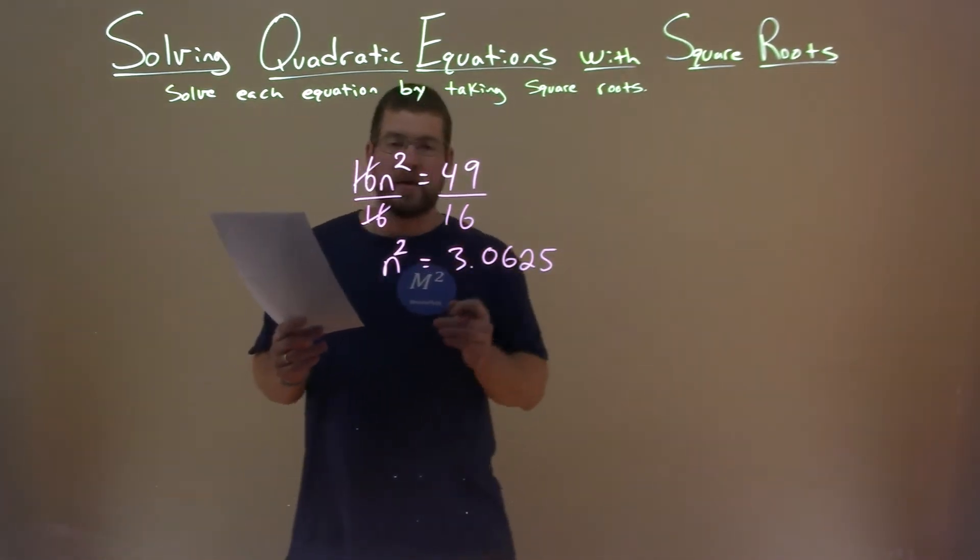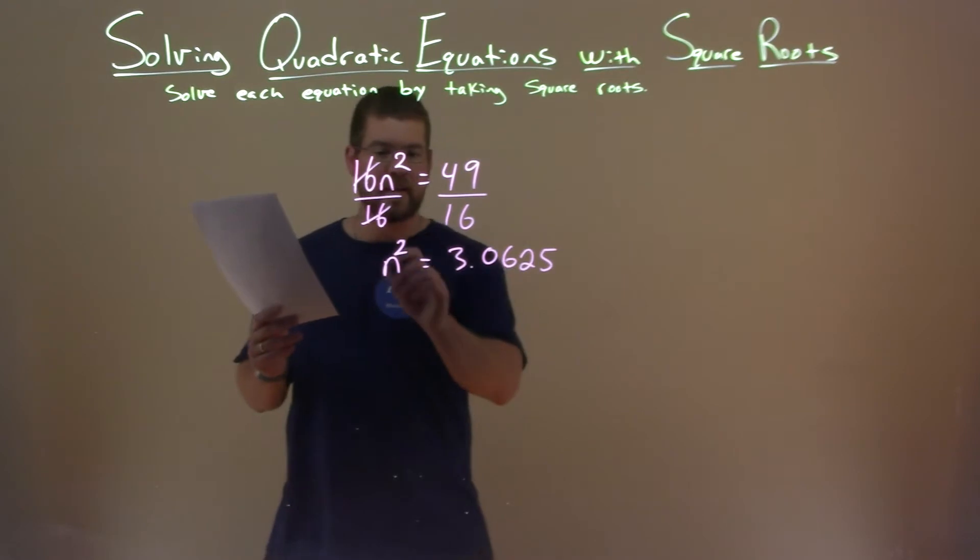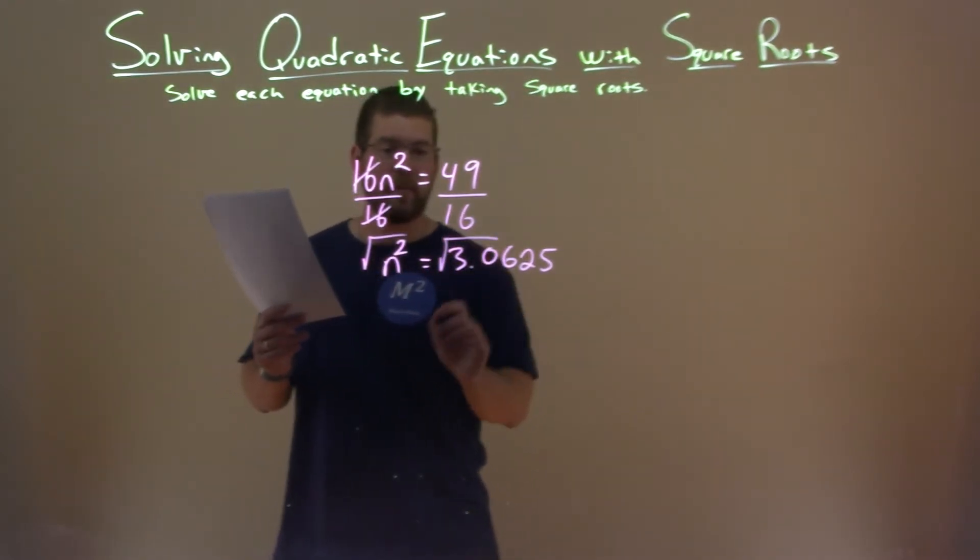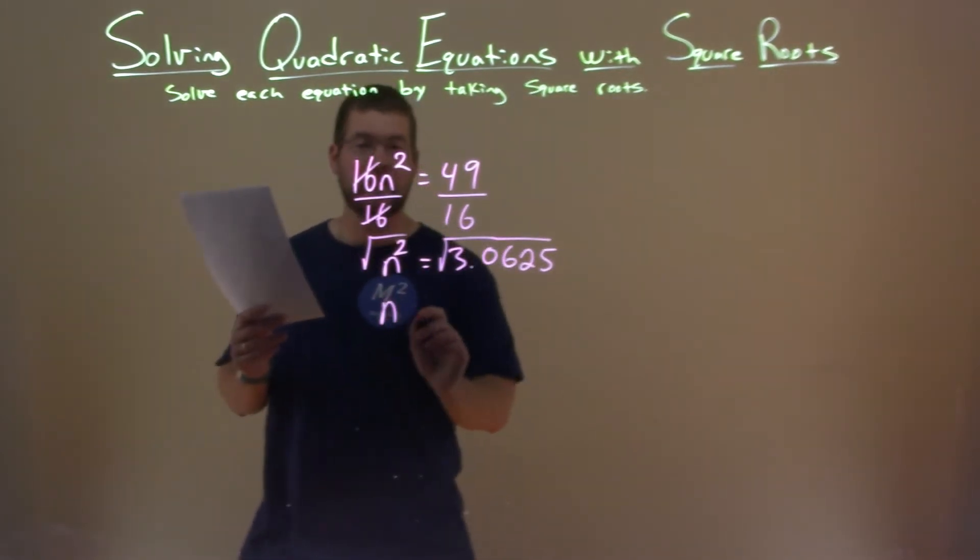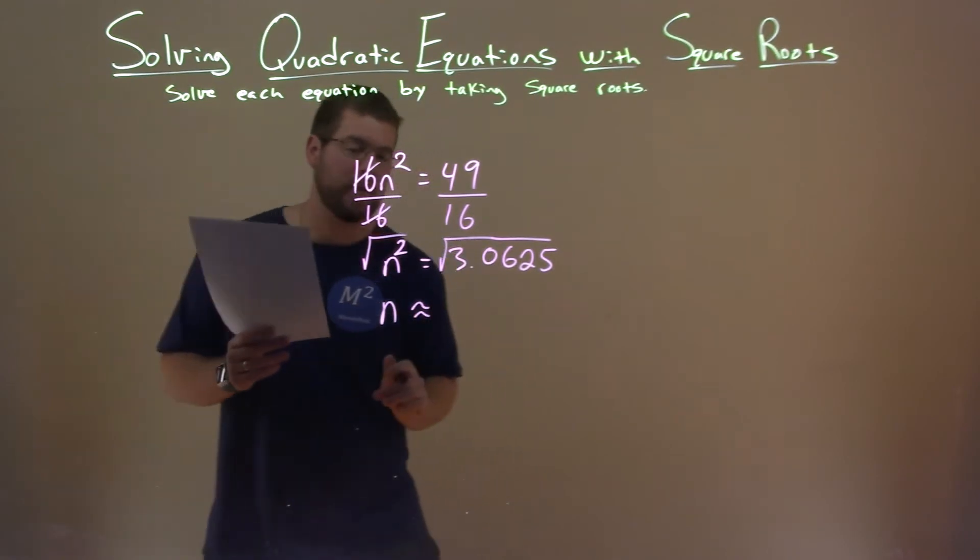Now we have n squared equals 3.0625. If I take the square root of both sides, I'm left with n by itself. That's great. Now this is going to be approximate here, okay?